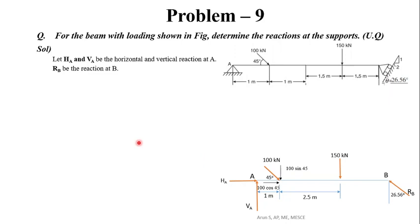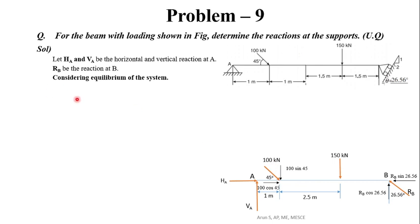We are going to consider the equilibrium of this system. The 100 kN load has a horizontal component of 100 cos 45 and a vertical component of 100 sin 45. For RB, since the angle is 26.56 degrees, the vertical component will be RB cos 26.56 and the horizontal component is RB sin 26.56. Taking the moment about A equal to zero.